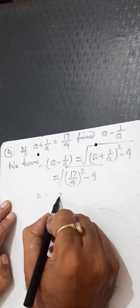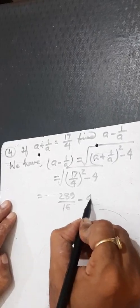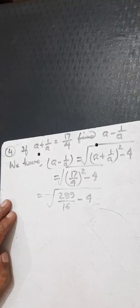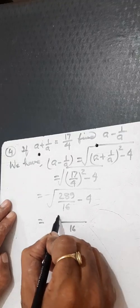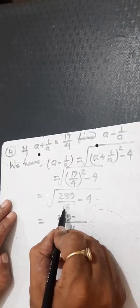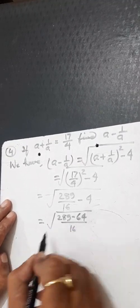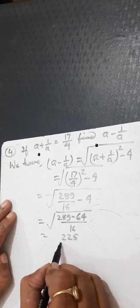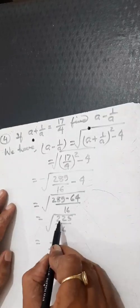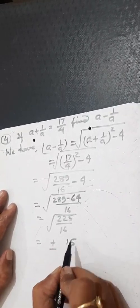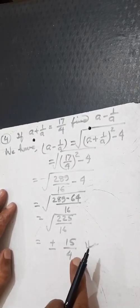Putting the value: a plus 1 by a equals 17 by 4. So (17 by 4) squared minus 4 equals 289 by 16 minus 4. Taking LCM as 16: (289 minus 64) by 16 equals 225 by 16. Taking the square root: a minus 1 by a equals plus or minus 15 by 4.